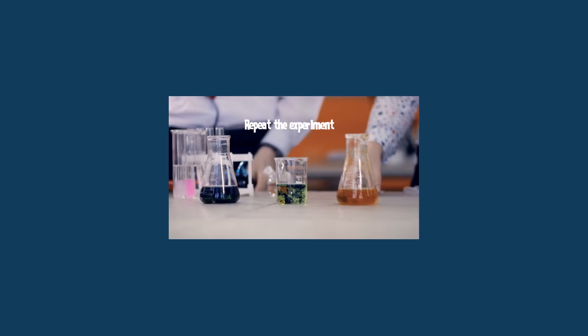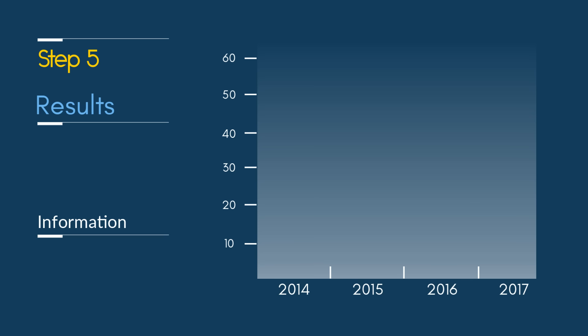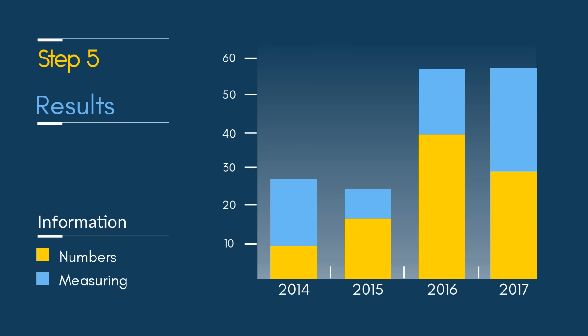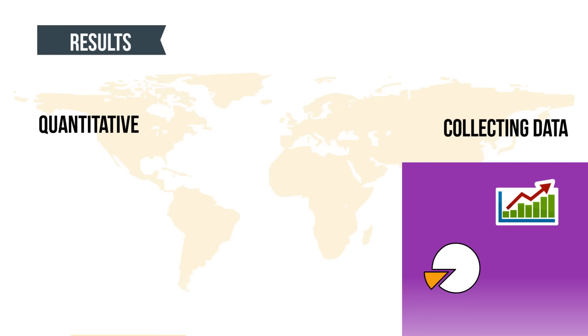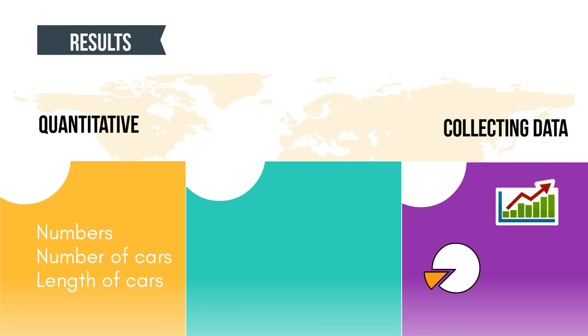Step 5 is results. This is the information that you have gathered. Quantitative data is data that is numbered. Many times it is recorded on charts, tables, and graphs.